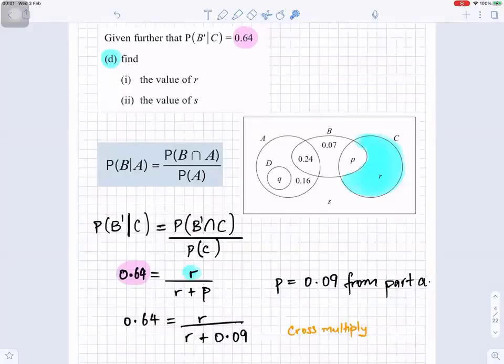Given further that probability of B dash given C is equal to 0.64, find the value of R. So we're going to use probability of B given A is equal to probability of B intersection A divided by probability of A. So probability of B dash given C is equal to probability of B prime intersection C divided by probability of C. And the probability of B dash given C is 0.64, given in the question.